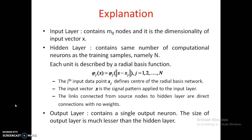The output layer contains a single output neuron in this example, but in practice there may be more neurons. However, the output layer size should be much less than the hidden layer size. This ensures the network converges with very few iterations.